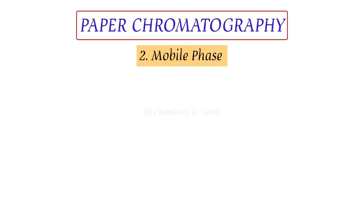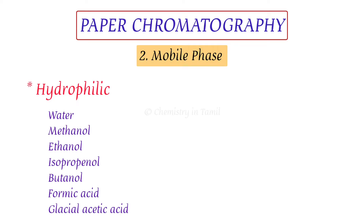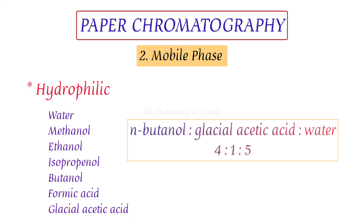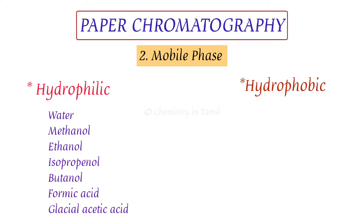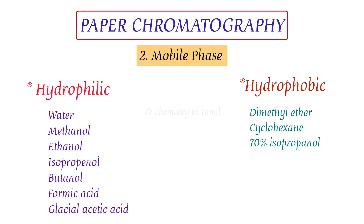Next is the mobile phase. In paper chromatography, the mobile phase is typically hydrophilic. Examples include water, methanol, ethanol, isopropanol, butanol, formic acid, glacial acetic acid, etc. The major mobile phase ratio used is n-butanol, glacial acetic acid, and water. Hydrophobic mobile phases include diethyl ether, cyclohexane, and most organic solvents. The stationary phase is prepared alongside the mobile phase.